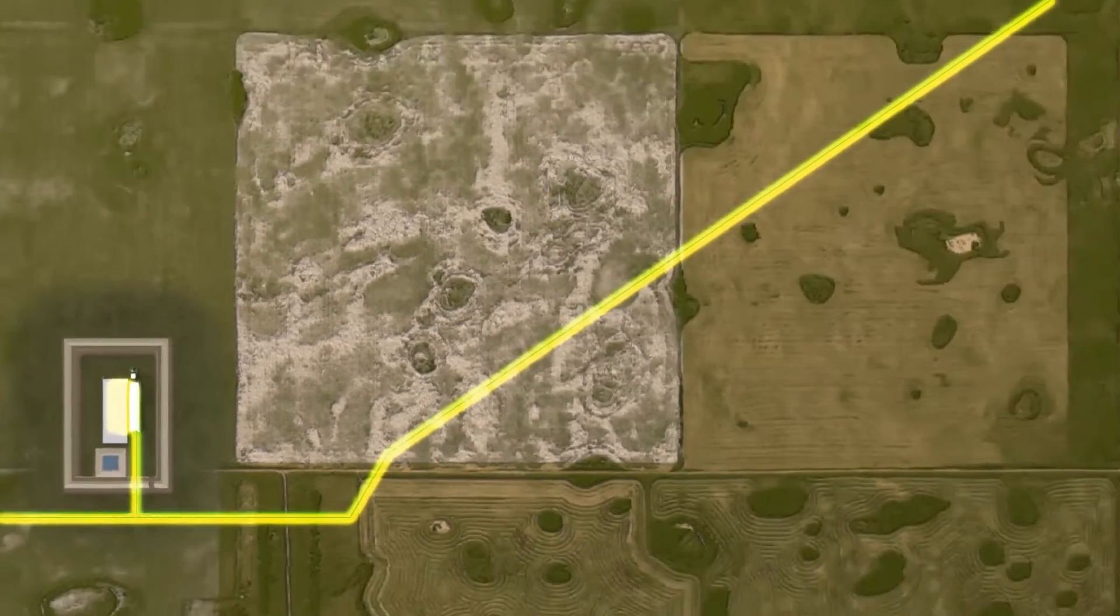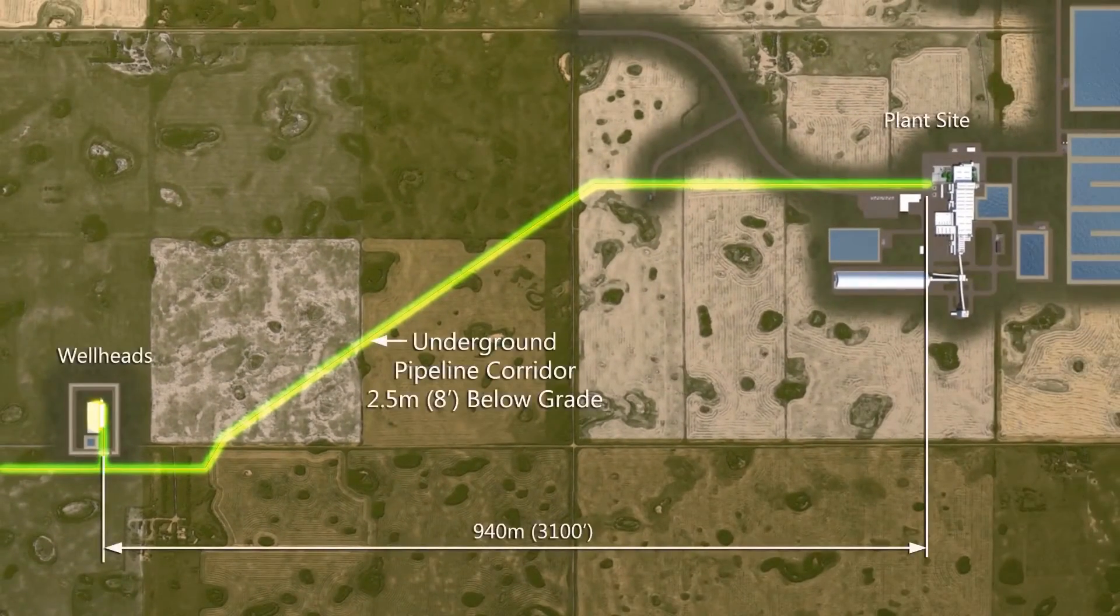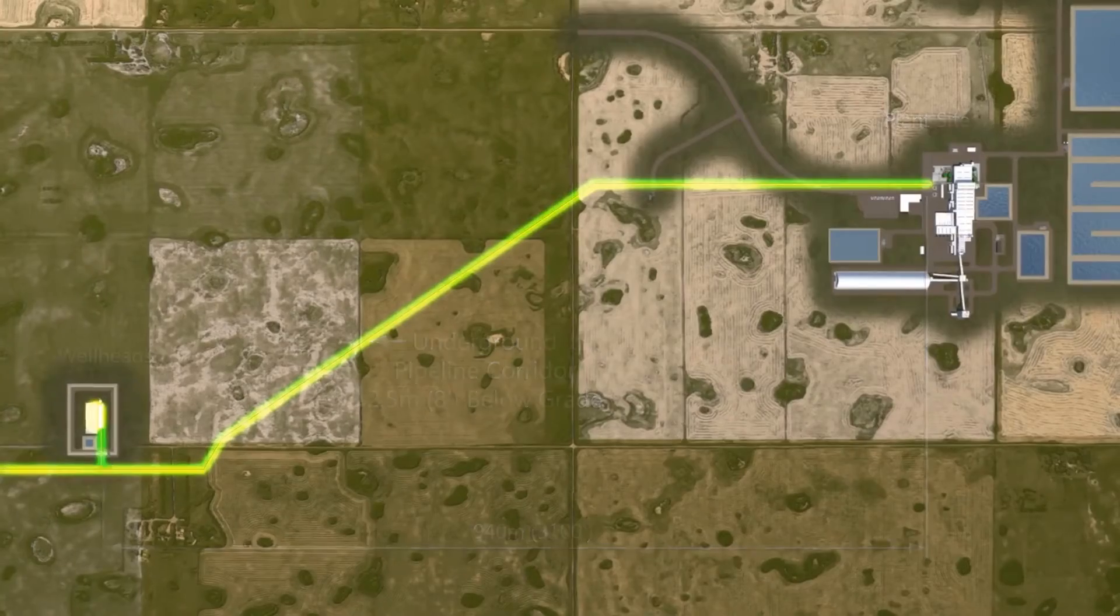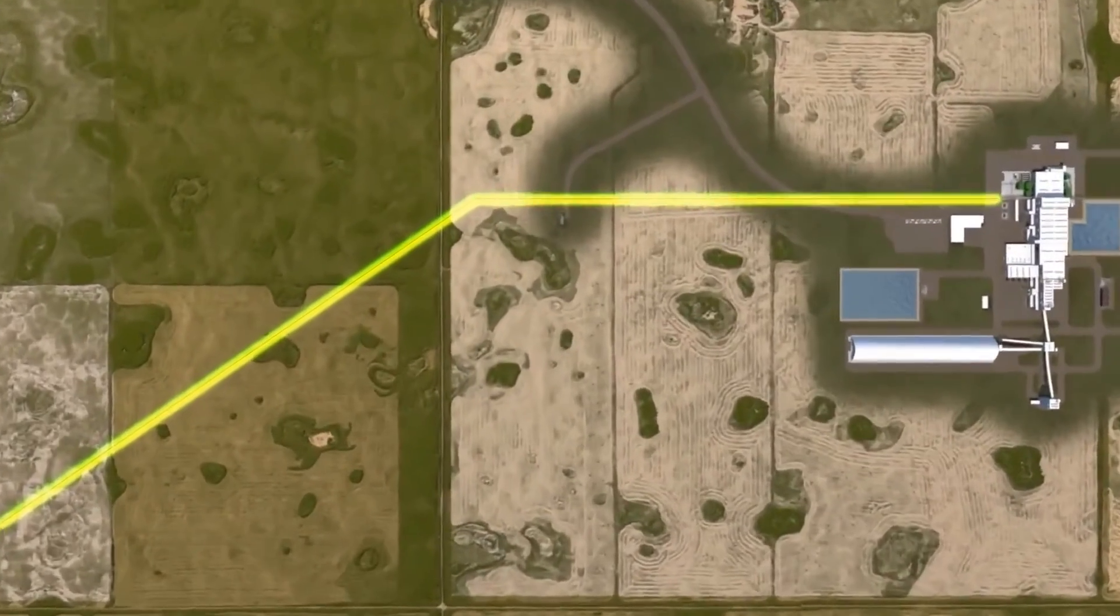The wellfield is connected to the plant site via a series of 6 pipelines ranging from 20 inches to 30 inches in diameter. The pipelines will be buried 8 feet below the ground surface.